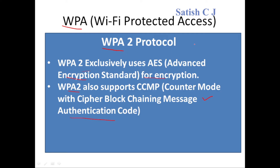Wi-Fi Protected Access version 2 (WPA2) was introduced in 2006. The main change is that WPA2 uses the more robust Advanced Encryption Standard (AES) for encryption, whereas WPA version 1 used RC4. WPA2 also supports CCMP — Counter Mode with Cipher Block Chaining Message Authentication Code — whereas WPA used MIC. WPA2 is very widely used today.